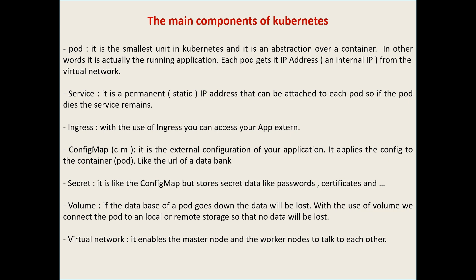Volume is another component of Kubernetes. If the database of a Pod goes down, the data will be lost. With the use of Volume, we can connect the Pod to local or remote storage so data is not lost. Networking enables the master node and the worker nodes to communicate with each other. This is the basic understanding of Kubernetes — just enough so we can understand the installation better. Now we go further and install Kubernetes on a Linux machine.